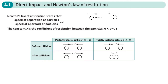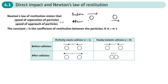So they move towards each other, they impact, and then they move off in their own direction. It may be that they move in opposite directions after the impact. This top diagram shows before the impact, and the bottom shows after. It may also be that after the impact they both move in the same direction.